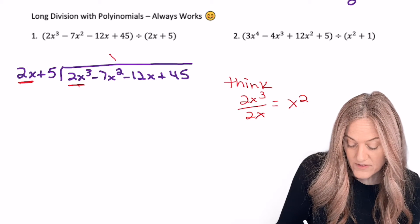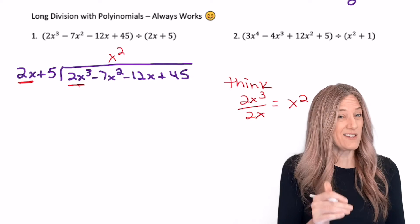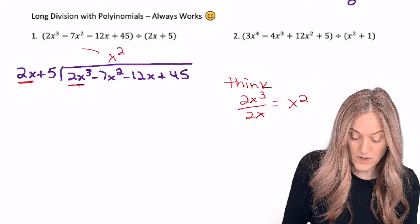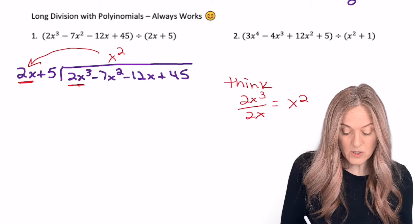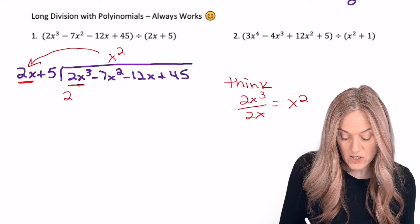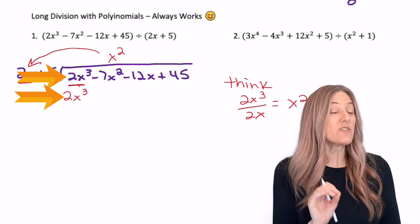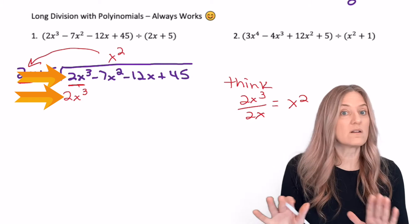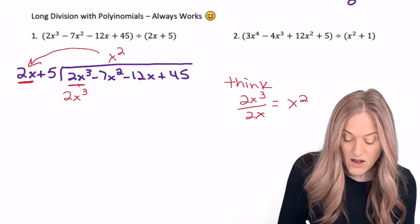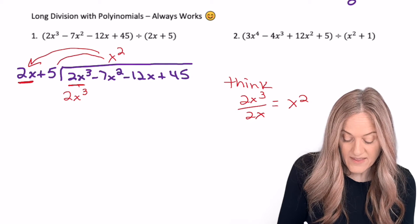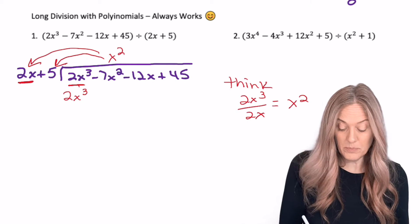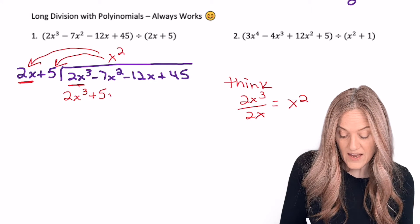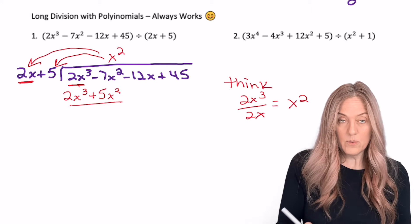We have to distribute that x squared into the binomial. x squared times 2x gives me 2x cubed. If those aren't the same, then I did something wrong — start all over. But then I also have to multiply the x squared into the 5, so plus 5x squared.